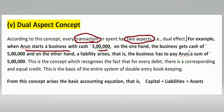The business gets cash of 5 lakh. On the other hand, a liability also rises. If you have a business, you will check the cash of 5 lakh — it will be an asset.